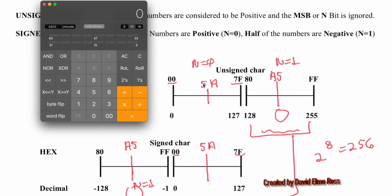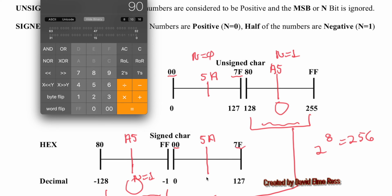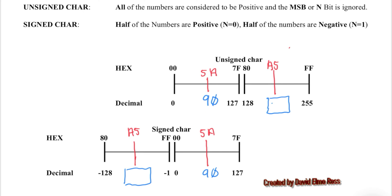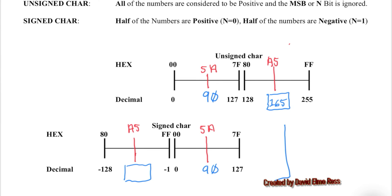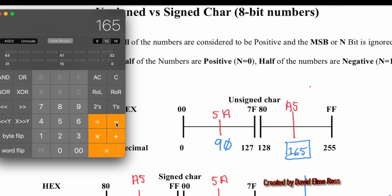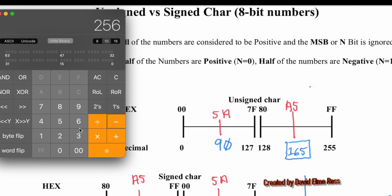Bringing up the MAC calculator, we can figure out what 5A is: type in hex 5A, hit decimal, and get 90 for both 5A unsigned and 5A signed. Now for A5 as an unsigned number, the calculation works out to be 165. We know there's an offset of 2 to the 8th, or 256, between the two systems. So we do 256 minus 165 and put a negative sign in front — the signed value of A5 is minus 91.